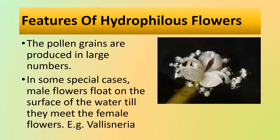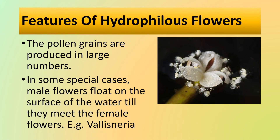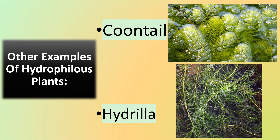An example is Vallisneria. Here we can see a female Vallisneria flower surrounded by some male Vallisneria flowers. The female flower is attached to the female plant, while the male flower detaches from the plant and starts floating up to the water level so that the pollen can fall onto the stigma of the female flower. Other examples of hydrophilous plants are coontail and Hydrilla.